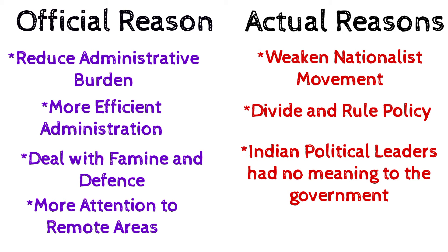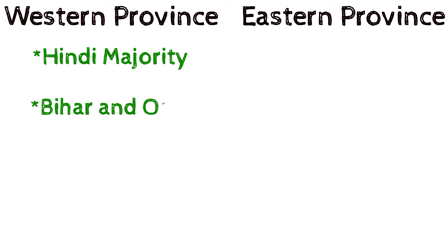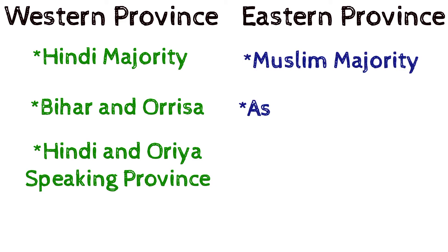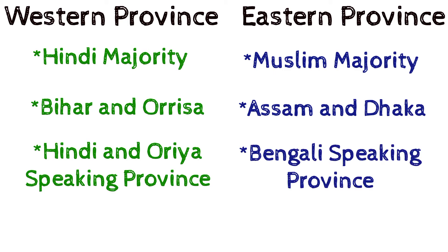Two new provinces were formed after the partition: the Western Province and the Eastern Province. The Western Province was a Hindu-majority province with Bihar and Orissa, and was a Hindi and Oriya-speaking province. Whereas the Eastern Province was a Muslim-majority province with Assam and Dhaka, and was a Bengali-speaking majority area.